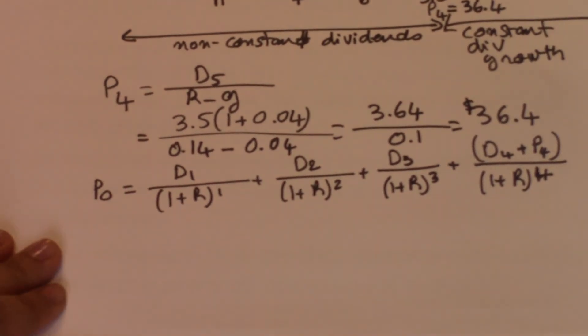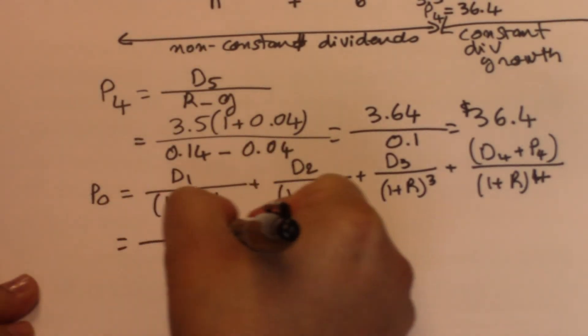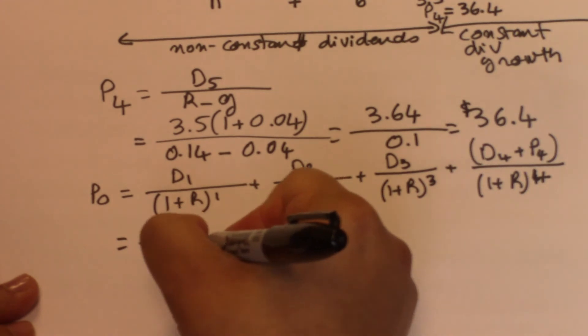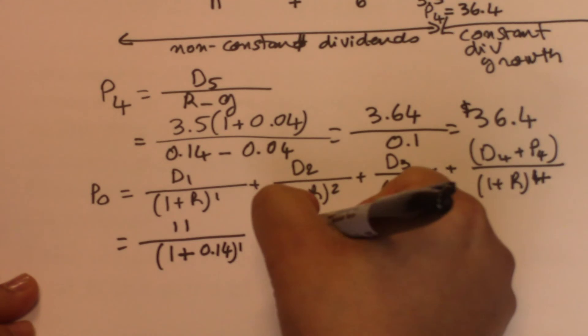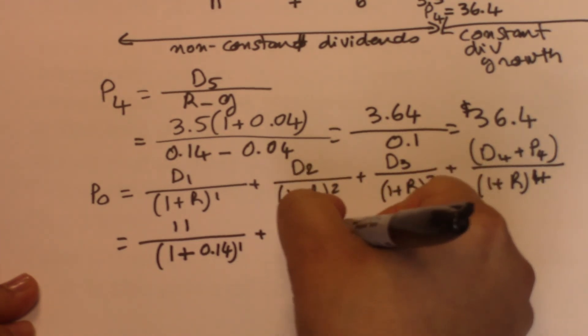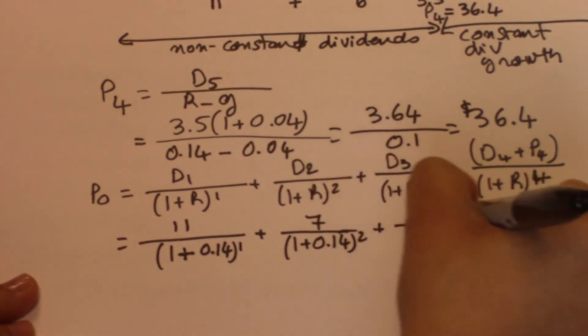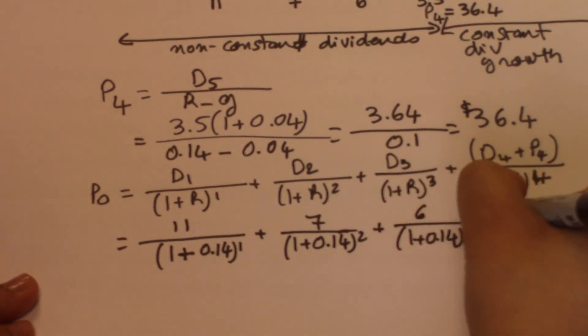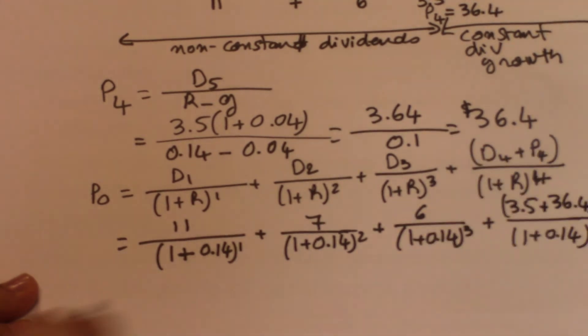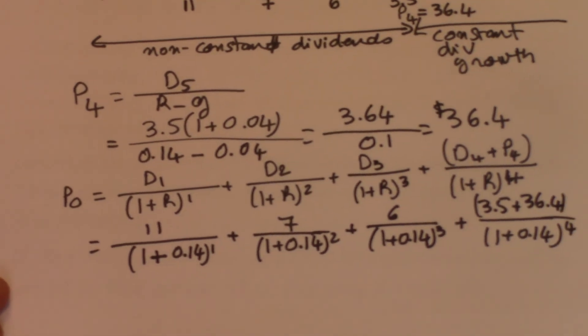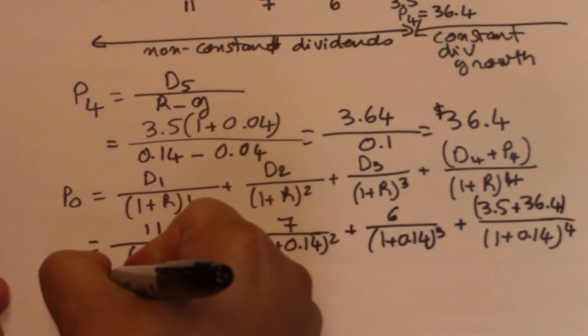Now we can just plug in our variables. P4 divided by 1 plus D3 divided by 1 plus 0.14 to the power 4. This gives us a price of $42.71.